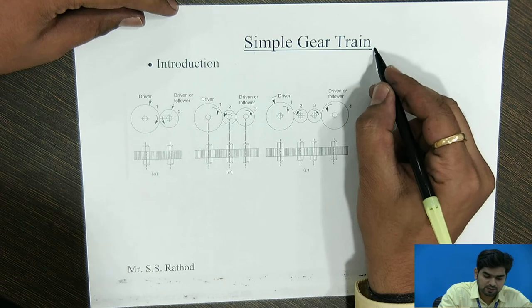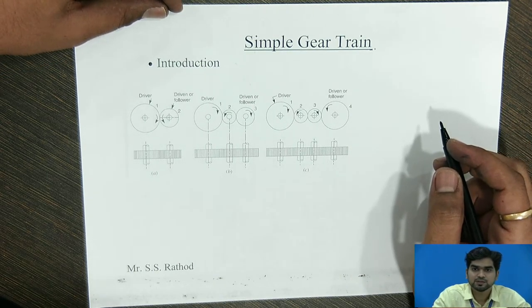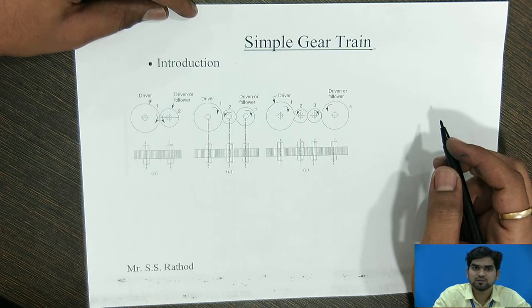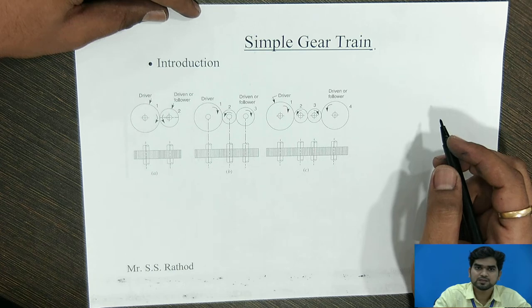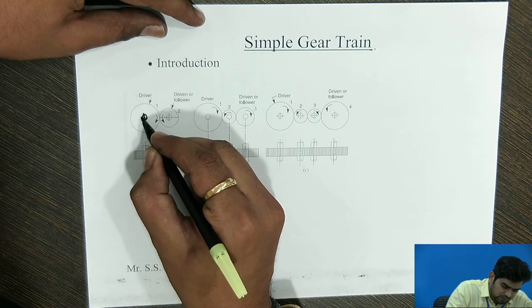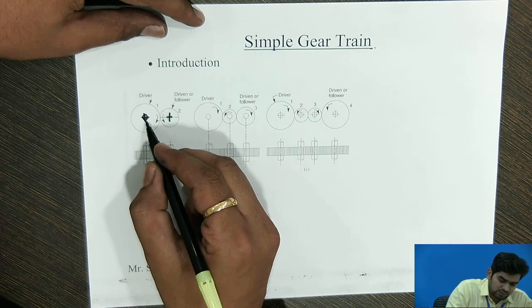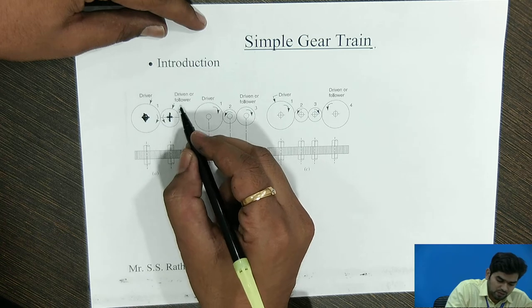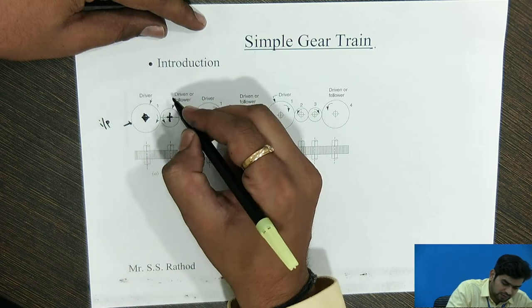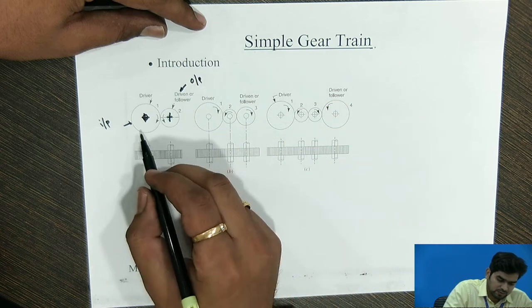In a simple gear train, the gear trains are generally used for reducing the speed ratio. If on one shaft only one gear is mounted, then we can transmit the speed or power from one shaft to another shaft using different gears mounted on the shafts. In this case the shafts are parallel to each other. The shaft having the input is called the driver and the output shaft is called the driven or follower.